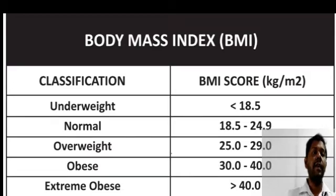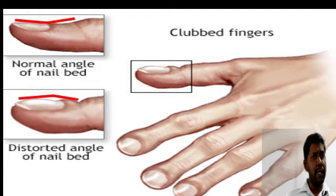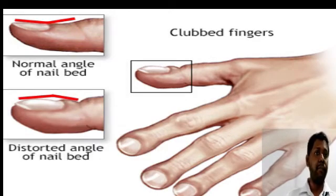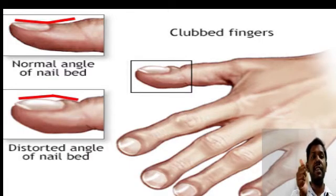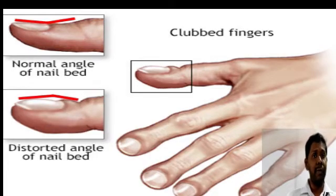Coming to constitutional signs — the first one is clubbing. Clubbing is defined as bulbous enlargement of the soft tissue at the terminal end of the phalanx of the fingers. To assess it, we use the Schamroth sign: in normal persons, placing the thumbs together shows a diamond shape, but in patients with clubbing, the bulbous enlargement prevents formation of the diamond shape.